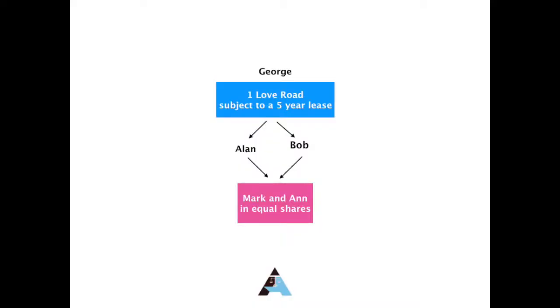Hello and welcome to part two on the first registration of unregistered land. In my previous video I explained how to investigate title to unregistered land. The scenario we used was a freehold land of the late George, One Love Road, subject to a lease of five years, being transferred by Alan and Bob, the executors, to Mark and Anne, the beneficiaries, who will hold the property as tenants in common in equal shares.